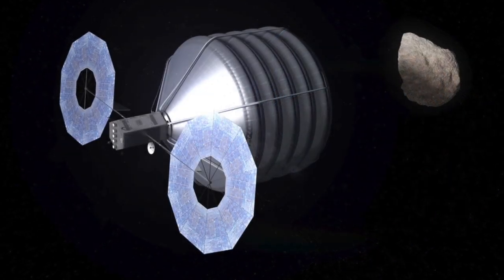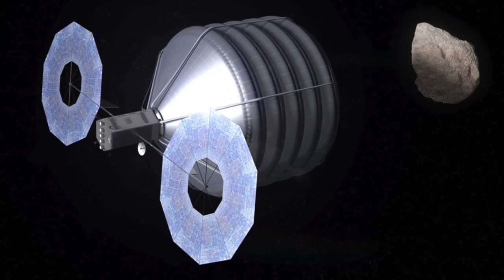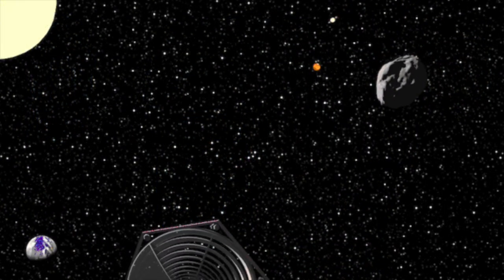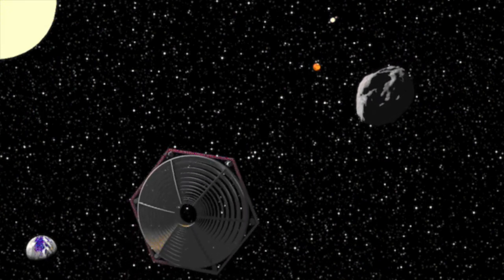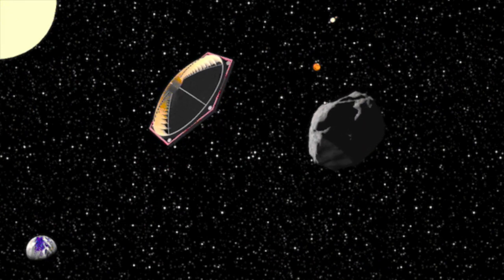If we had advance warning that something capable of widespread devastation were heading straight towards us, we'd have three options: evacuate the impact zone, destroy the object before it arrives, or somehow nudge it in time so that it misses us.